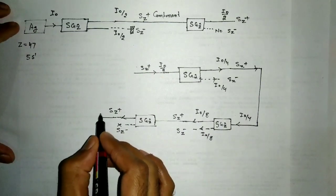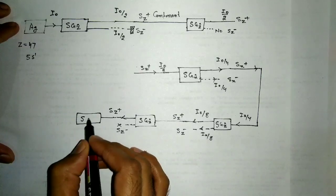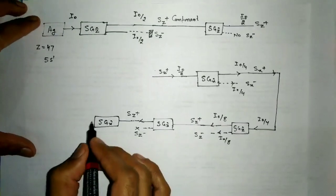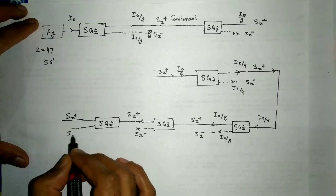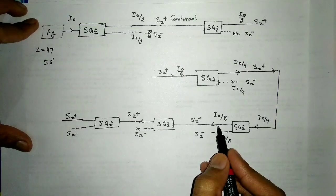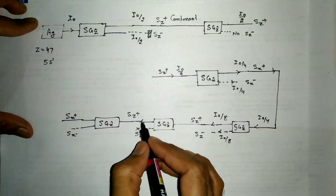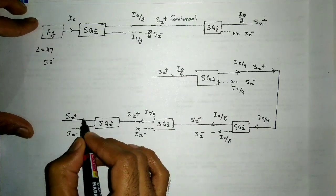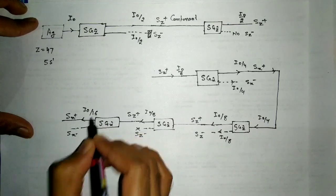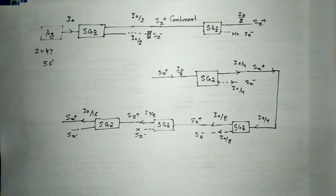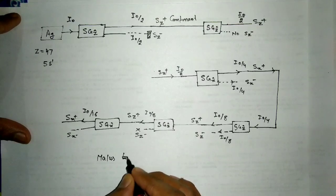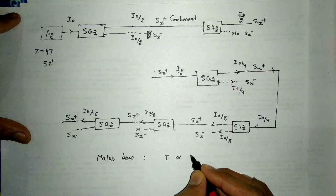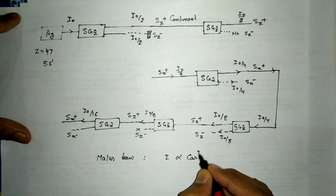Again, if the Sz+ component is passed through another SG-Z arrangement, only Sz+ is available. If this is then passed through an SG-X arrangement, it is divided into two components, Sx+ and Sx−, with intensity I₀/8, which is then reduced to I₀/16. In this way, the intensity is reduced by half each time. This follows Malus's Law in optics: I ∝ cos²θ.